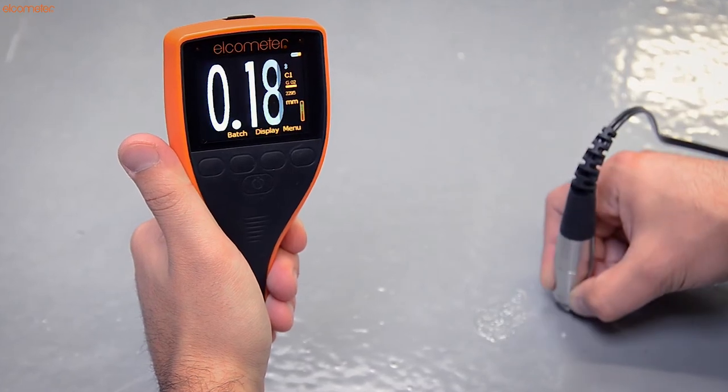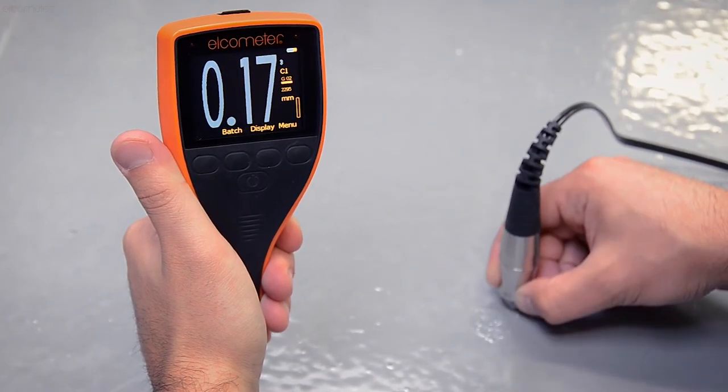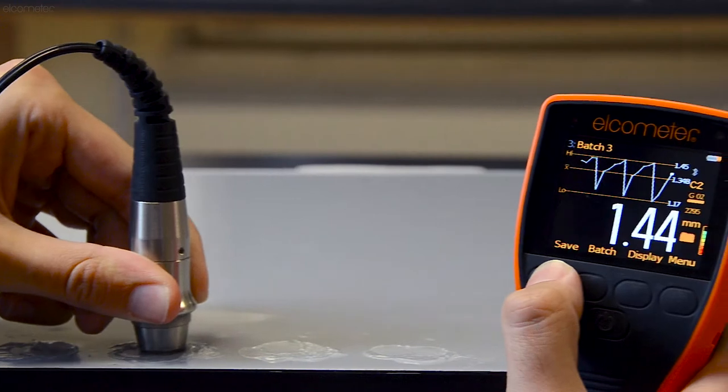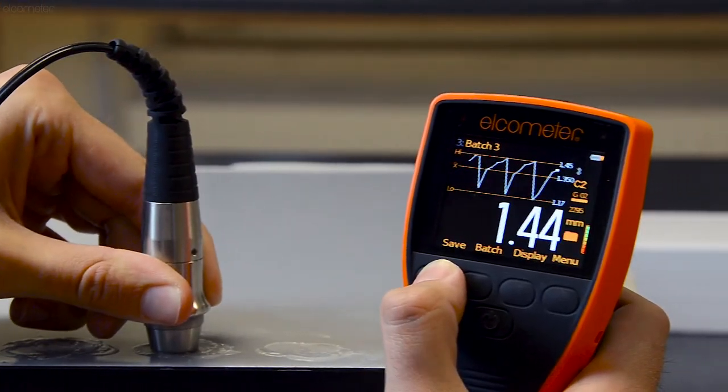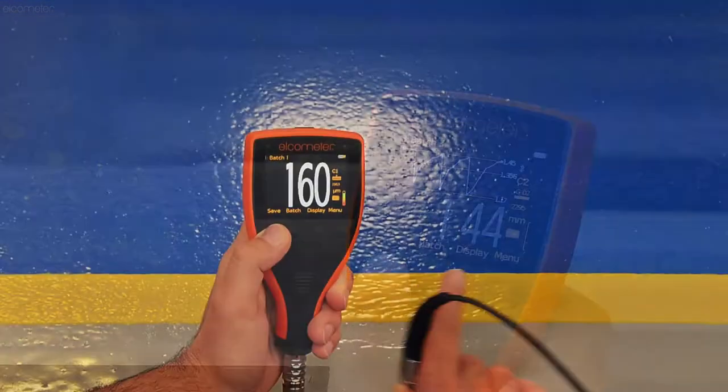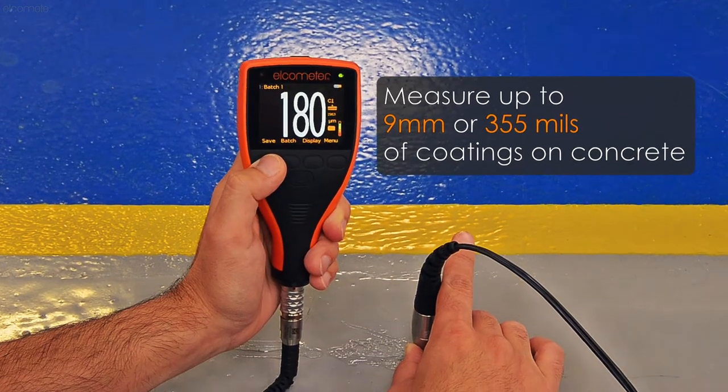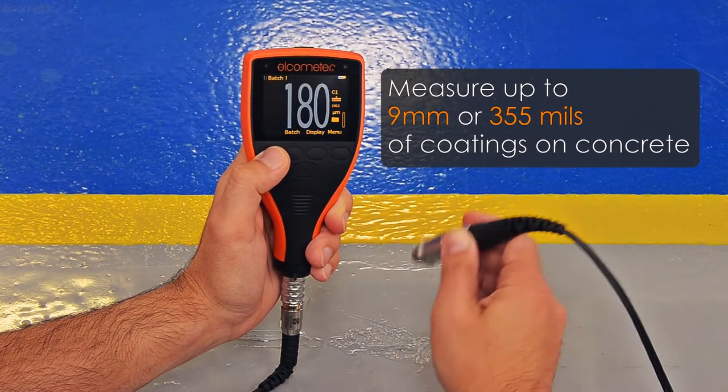The Elcometer 500 Coating Thickness Gauge incorporates state-of-the-art electronics and measurement technology to accurately and reliably measure up to 9mm of coatings on concrete or other similar substrates.